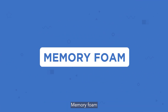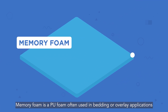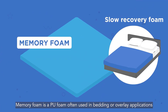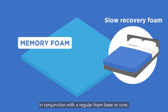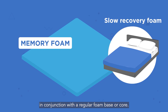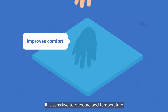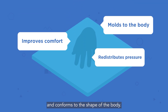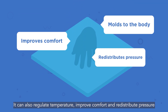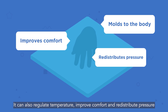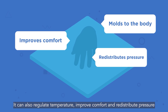Memory foam is a PU foam often used in bedding or overlay applications in conjunction with a regular foam base or core. It is sensitive to pressure and temperature and conforms to the shape of the body. It can also regulate temperature, improve comfort, and redistribute pressure.